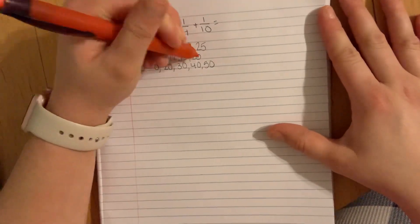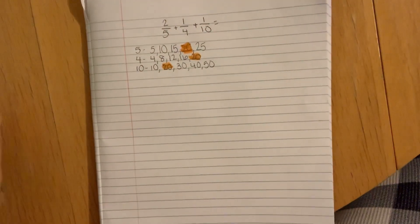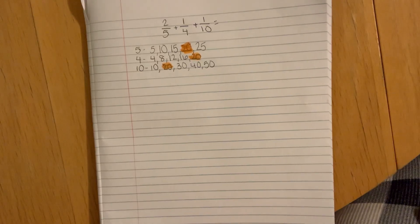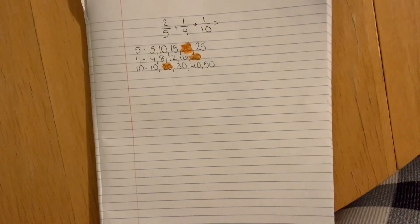You want the smallest number to be the same. We have 20 as a common multiple of all three of those numbers, so we're going to give them each a denominator of 20.